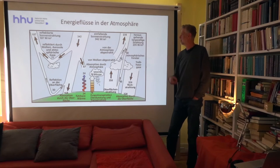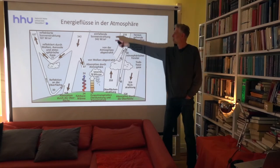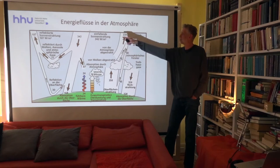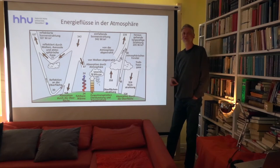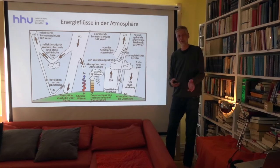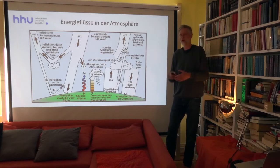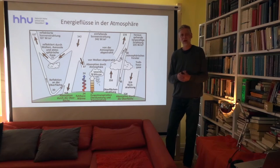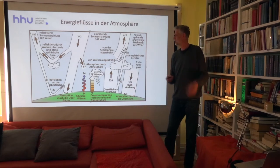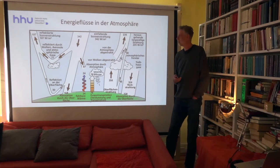235 Watt pro Quadratmeter sind die erdeverlassende Infrarotstrahlung. Wir strahlen 342 Watt ein, davon werden 107 Watt reflektiert – 342 minus 107 sind gerade 235. Das zeigt, dass unsere Atmosphäre im Gleichgewicht ist. Wenn wir immer mehr aufnehmen würden als wir abstrahlen, würde sich die Erde ständig erwärmen. Es stellt sich ein Strahlungsgleichgewicht ein, sobald die Temperatur erreicht ist, bei der die Emission der Erde die Absorption der Sonne gerade ausgleicht. Die latente Wärme – Wolkenbildung und Wolkenauflösung – ist in dem Diagramm ebenfalls gezeigt.